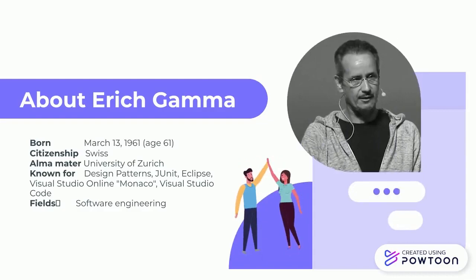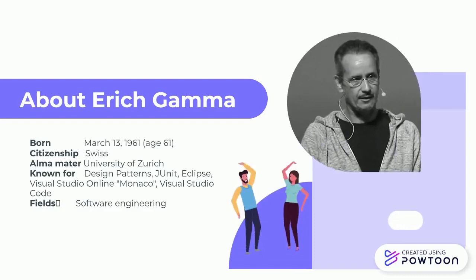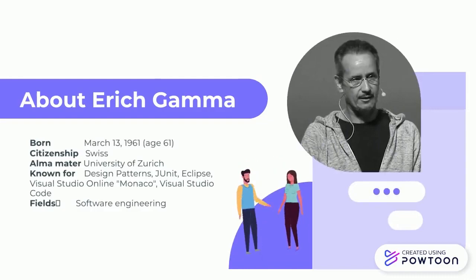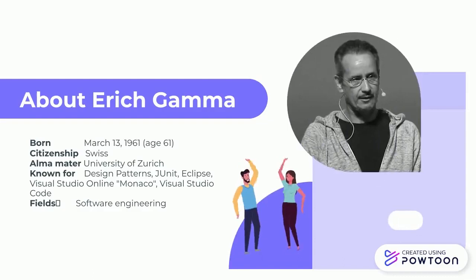He also leads the design of the Eclipse Java development tool and works on the IBM Rational Jazz project. In 2011, he joined the Microsoft Visual Studio team and leads a development lab located in Switzerland that developed the Monaco suite of components for browser-based development. Other products developed include Azure DevOps services, Visual Studio Code, Mobile Service, Azure Websites, and Office 365 development tools.